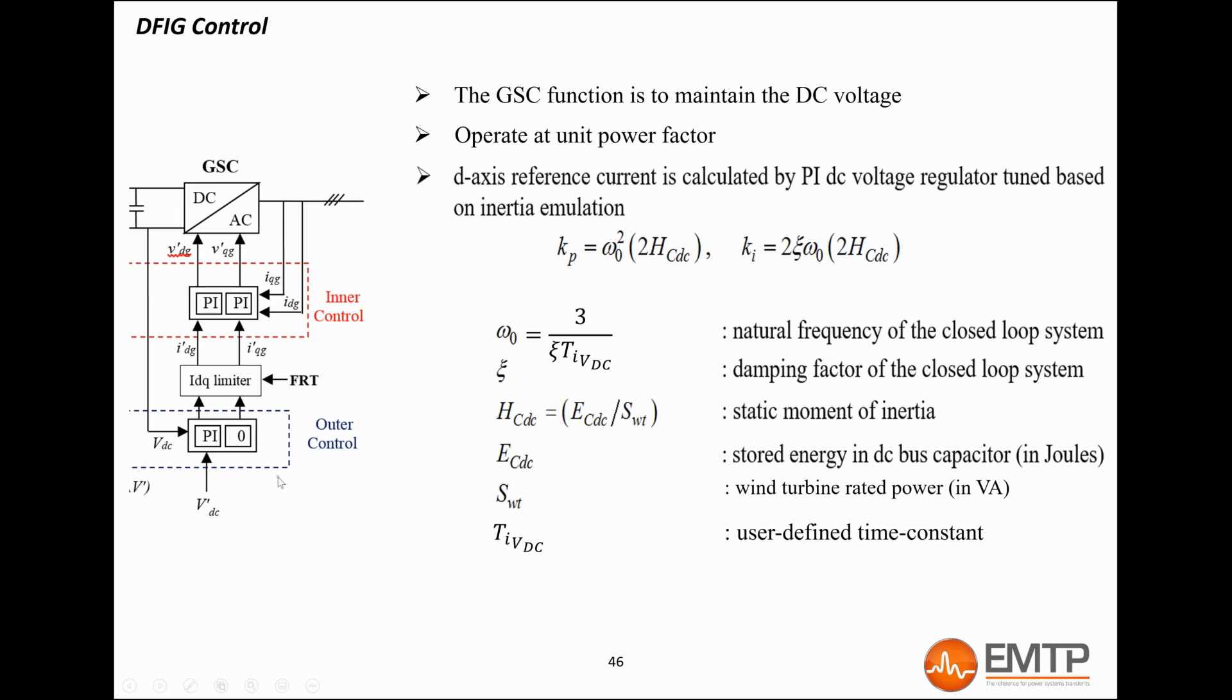Here again, two level control loops are utilized. On the d-axis, the outer loop regulates the DC bus voltage to its nominal value. The output of this loop is the d-axis current reference, which will be the reference for the inner loop. The inner loop, which is the fastest one, produces the d-axis voltage reference to follow the current reference.